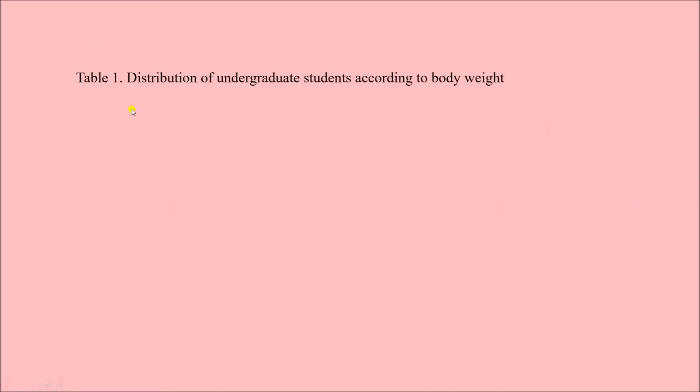Here we have mentioned the title of the table: 'Distribution of undergraduate students according to body weight.' From this title we understand that we have measured the body weight of certain undergraduate students and grouped or categorized them — that is why 'distribution of undergraduate students according to body weight.'